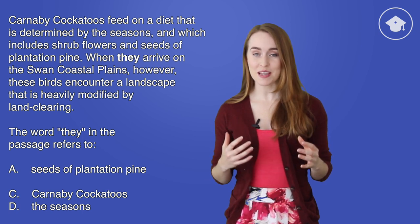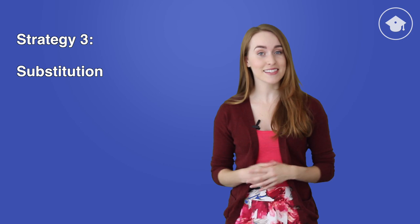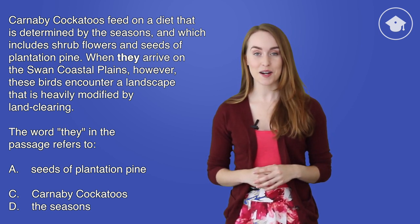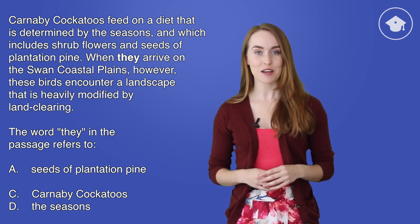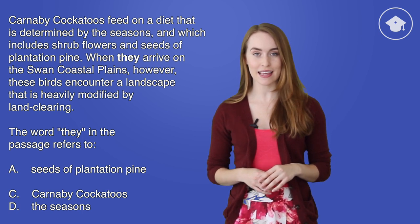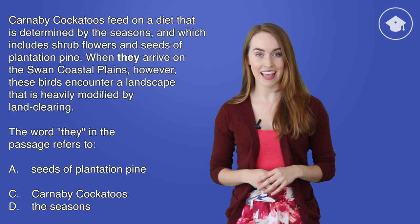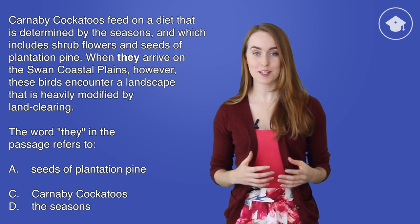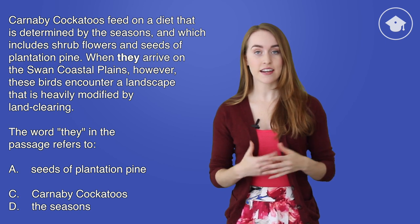Now we've got three possible answers to the question. How do we decide? We substitute the answers into the sentence and see if they make sense. Let's look at the question again. 'Carnaby cockatoos feed on a diet that is determined by the seasons and which includes shrub flowers and seeds of plantation pine. When they arrive on the Swan Coastal Plains, however, these birds encounter a landscape that is heavily modified by land clearing.' The word 'they' refers to: a) seeds of plantation pine, c) Carnaby cockatoos, d) the seasons. We substitute by removing 'they' and inserting the answer in its place.